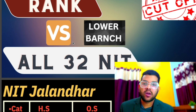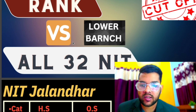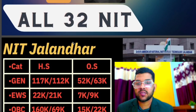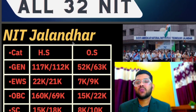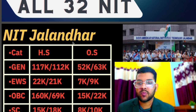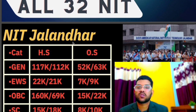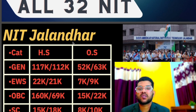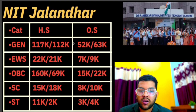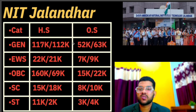Every year the lower branch cutoff is going lower and lower, meaning at a higher rank you can also get into a college. There are a total of 32 NITs in India now, not 31, because IIESt Shibpur is also an NIT from last year. For NIT Jalna, the data is: homestate general 1,17,000 and 1,12,000 for male and female. HS means homestate, OS means other state — 52,000 and 63,000 for male and female. After the slash is for female. For EWS, OBC, SC, ST respectively, the other state male data is shown sideways.